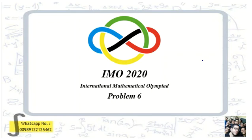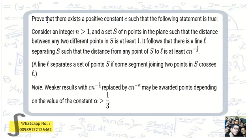IMO 2020 International Mathematical Olympiad problem number 6. The problem asks to prove that there exists a positive constant C such that the following statement is true: consider an integer n greater than 1 and a set S of n points in the plane such that the distance between any two different points in S is at least 1. It follows that there is a line L separating S such that the distance from any point of S to L is at least C times n to the power of negative one-third. Note: weaker results with n to the minus alpha may be awarded points depending on the value of alpha greater than one-third.